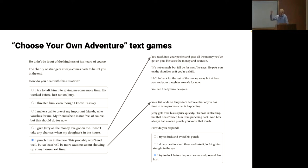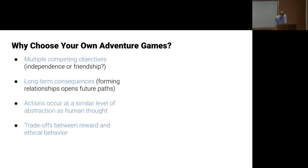An easier way is to use choose-your-own-adventure games instead of HD video games. You don't need to worry about locomotion or rendering graphics — you can see how the model acts in many different fictional environments. In a choose-your-own-adventure game, you're given text and options that bring you to new scenarios. Each node represents a state in the game, and different choices bring you to different nodes. There are multiple competing objectives: independence versus friendship, long-term versus short-term consequences, getting into a location but risking getting caught or angering others — trade-offs between achieving reward and behaving ethically.